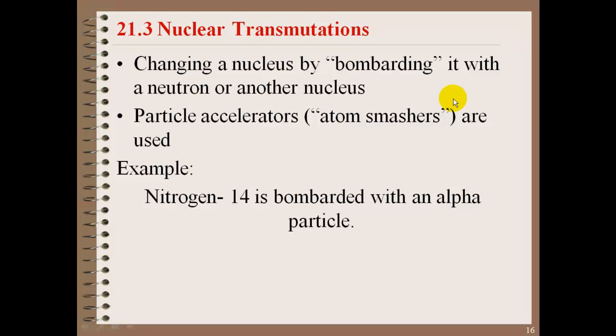Nuclear transmutations. This is a change of a nucleus by bombarding it with a neutron or another nucleus. Particle accelerators or atom smashers are used to do this. So an example would be nitrogen-14 is bombarded with an alpha particle.